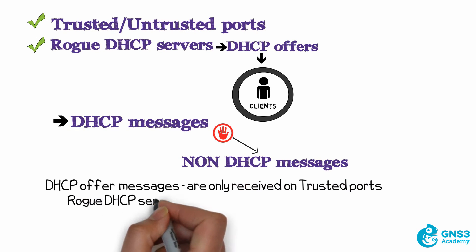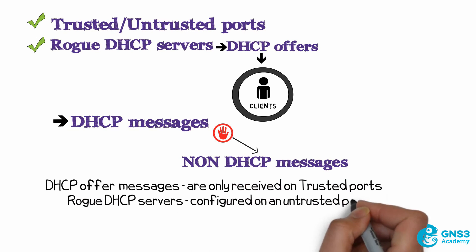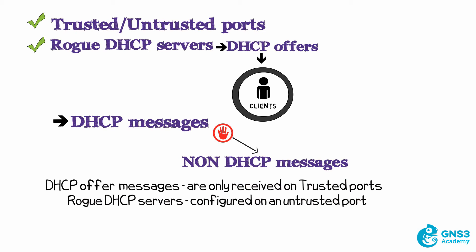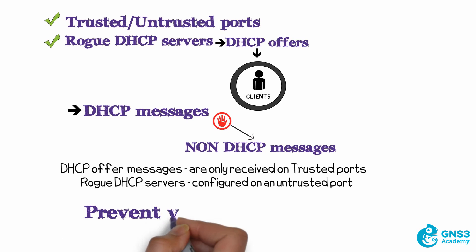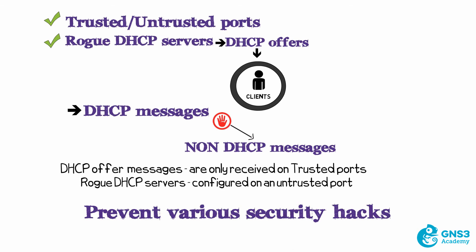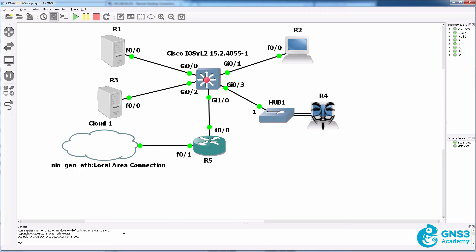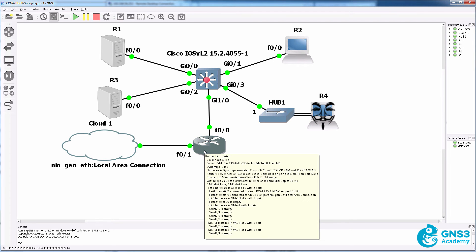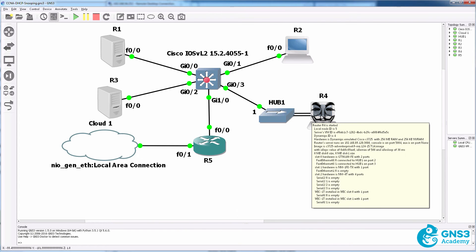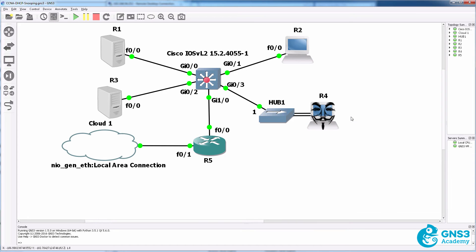If a rogue DHCP server was configured on an untrusted port, the offer from that DHCP server would not be forwarded to client PCs requesting IP addresses. This helps prevent various security hacks including man-in-the-middle attacks, where traffic from a PC going to the internet or router five is intercepted by a hacking PC, which allows the hacker to view all the traffic sent from the PC to its default gateway.